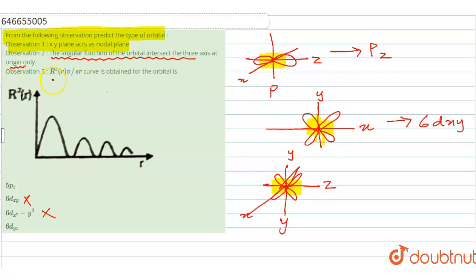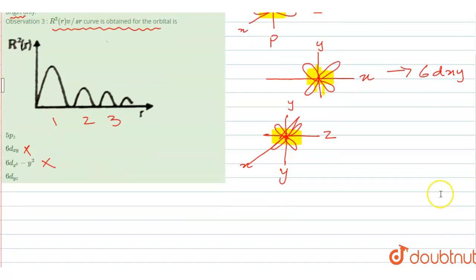Now we have to look at observation number three. The curve obtained for the orbital is - for the curve we'll note down the number of radial nodes. For number of radial nodes, let us look at the graph given to us. Here the node is number one, number two, and number three.